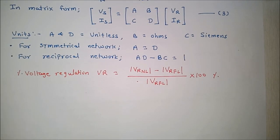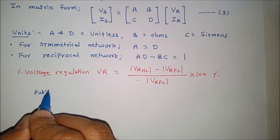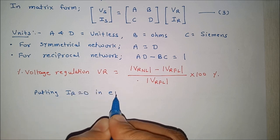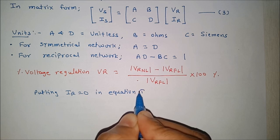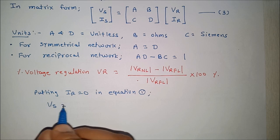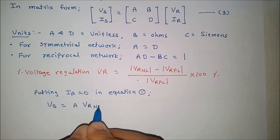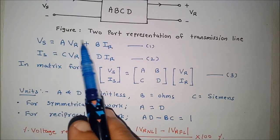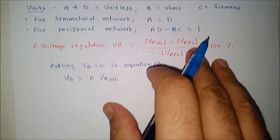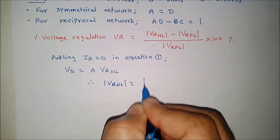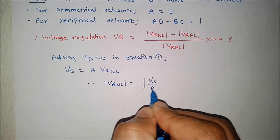So, if I put Ir equal to 0, whatever Vs is there or whatever Vr is there, so that will be Vr no load. So, if you put Ir equal to 0 in equation number 1, what we will get Vs equal to A into Vr no load, because if Ir is 0, this term will be 0. So, Vs will be equal to A into Vr no load. So, from this what will be magnitude of Vr no load? It will be magnitude Vs upon A.